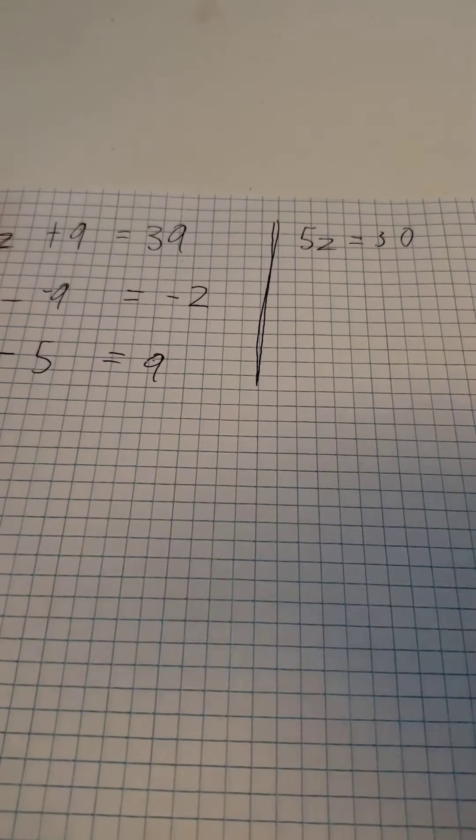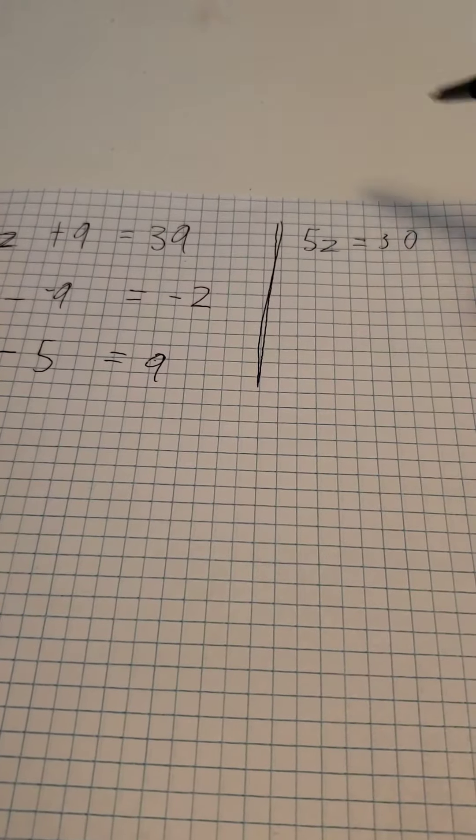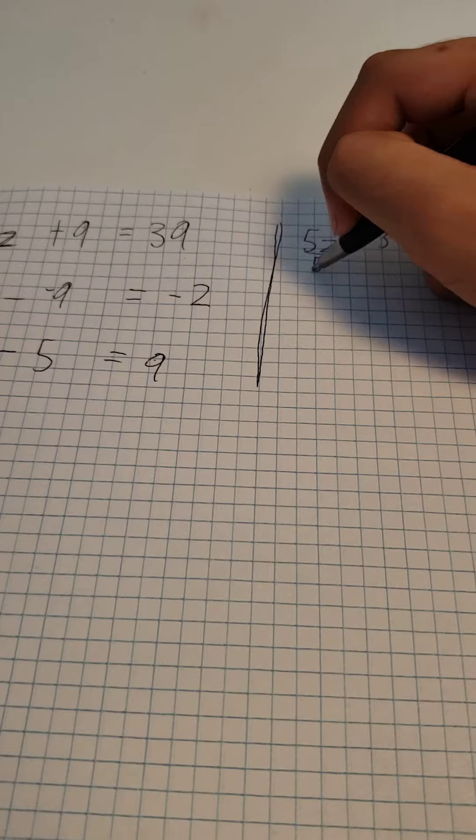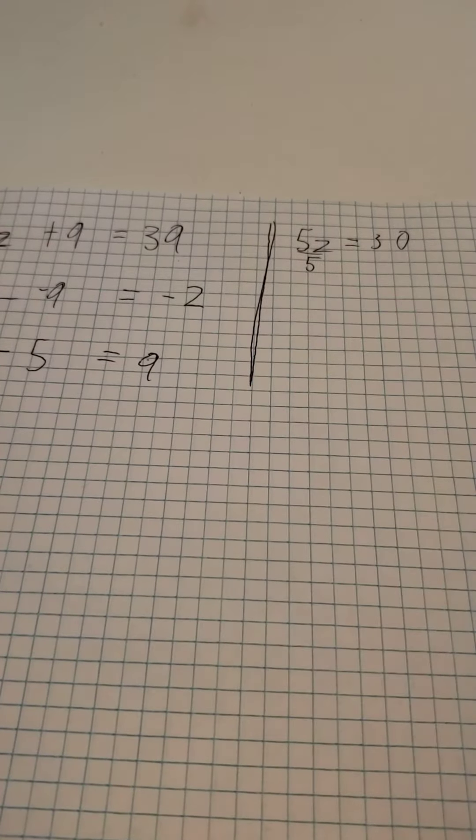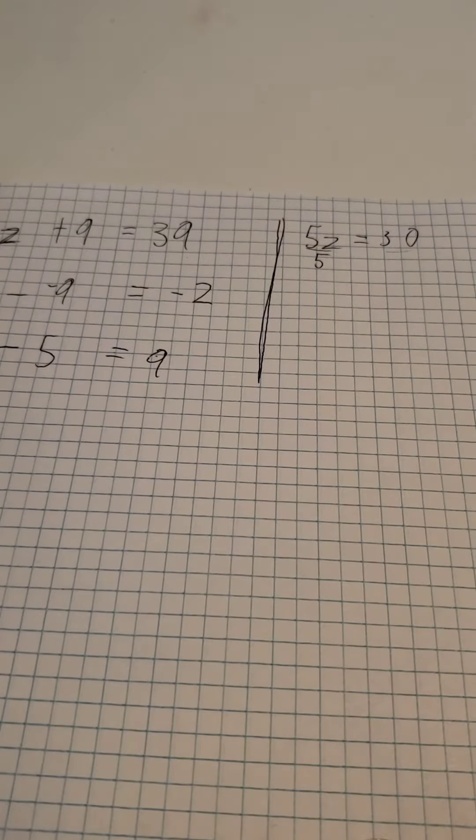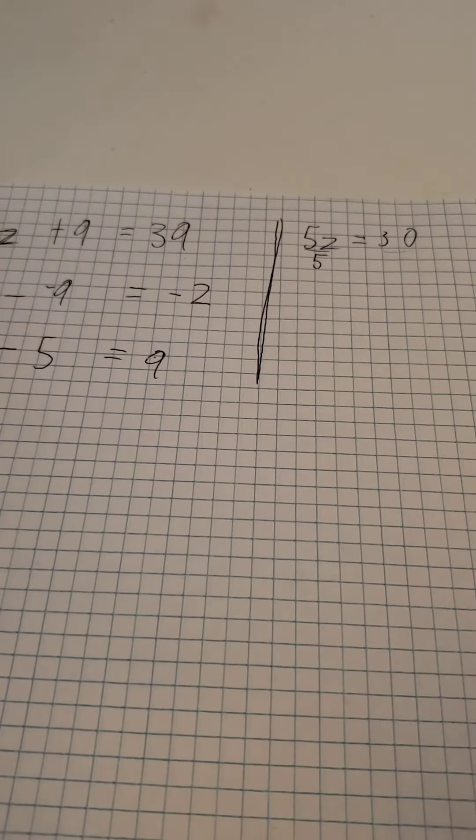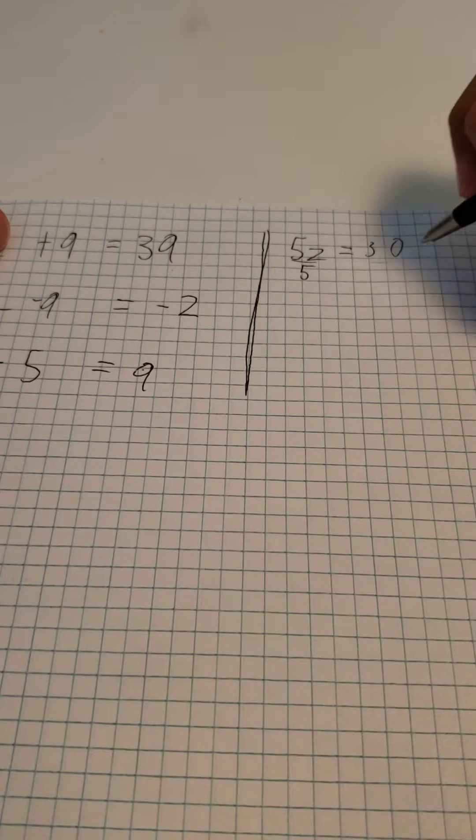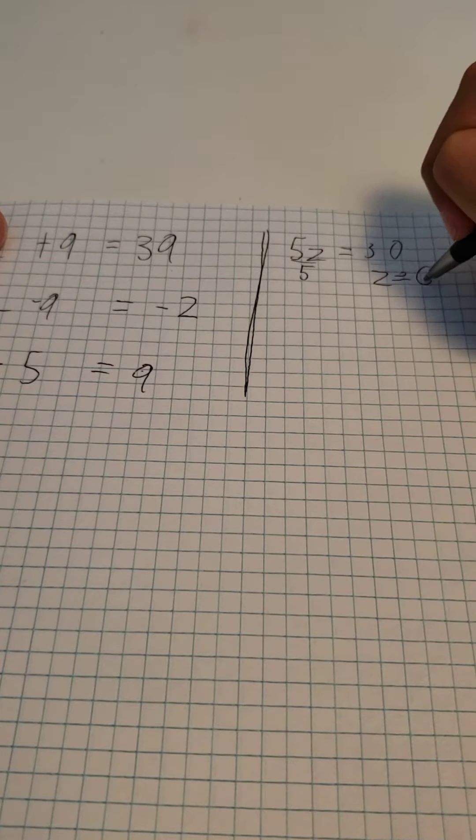Then, to simplify it even more, you divide by 5, because 5z divided by 5 equals z, but you also have to divide 30 by 5, which means in the very end, z equals 6.